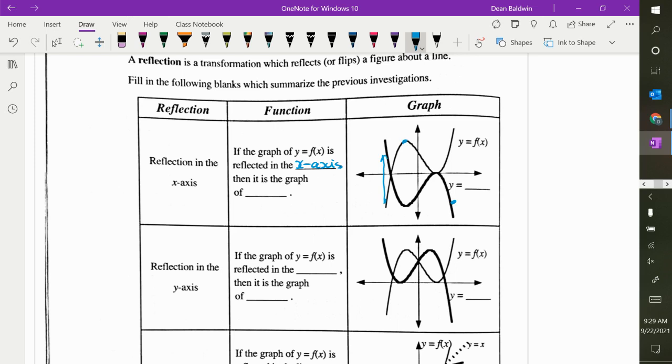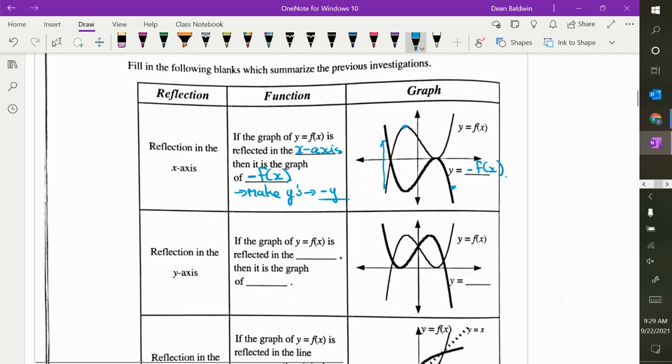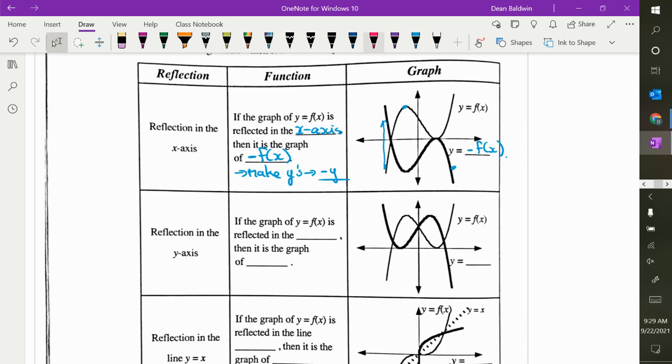So that's represented by negative f of x. That's a flip over the x-axis. Make y's negative. And by negative, I mean you put a negative in front of it. So if it's already negative, it becomes positive.